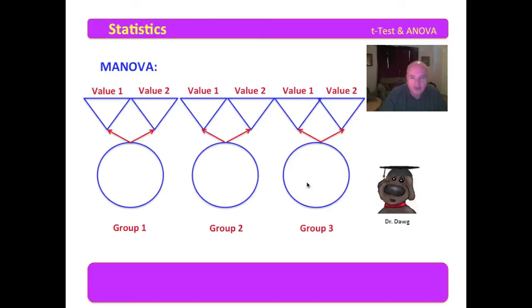Now, again, the groupings are generally nominal or ordinal. The values, variable values, the dependent values that we're examining, must be normally distributed. And we prefer that they be ratio.